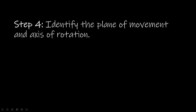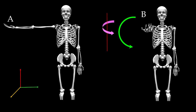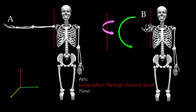Step 4 is to identify the plane of movement and the axis of rotation. In this case, our axis of rotation is a longitudinal axis through the humeral head, and therefore the plane of movement is going to be the transverse plane.